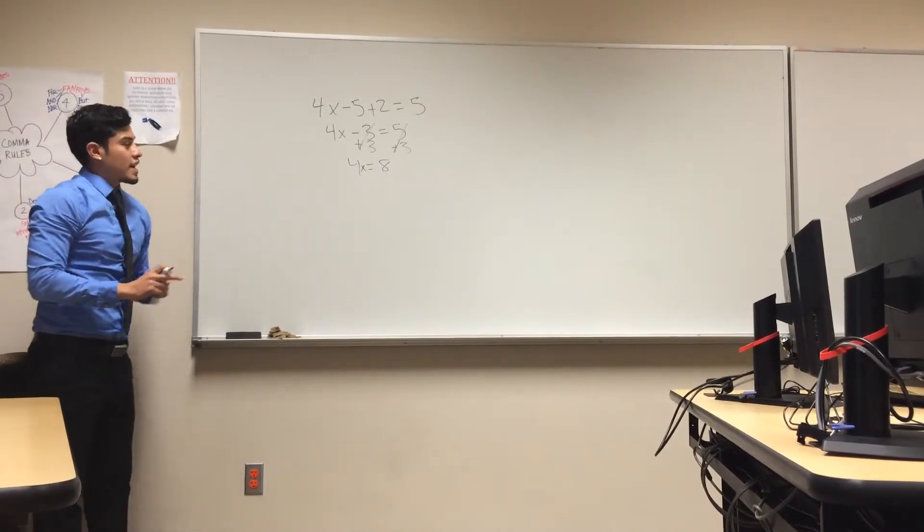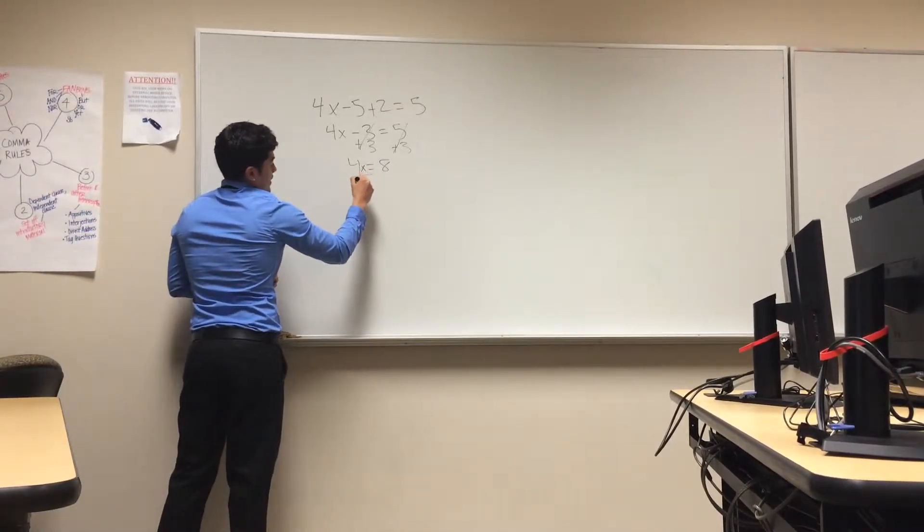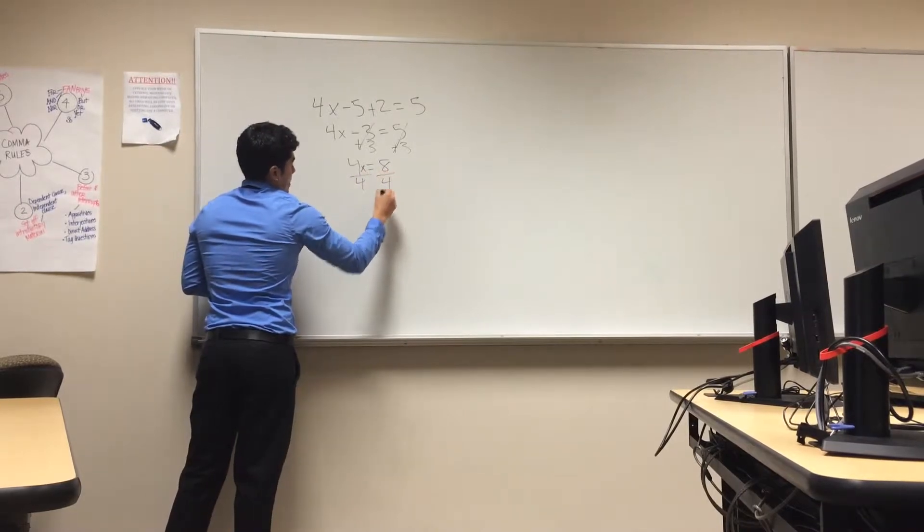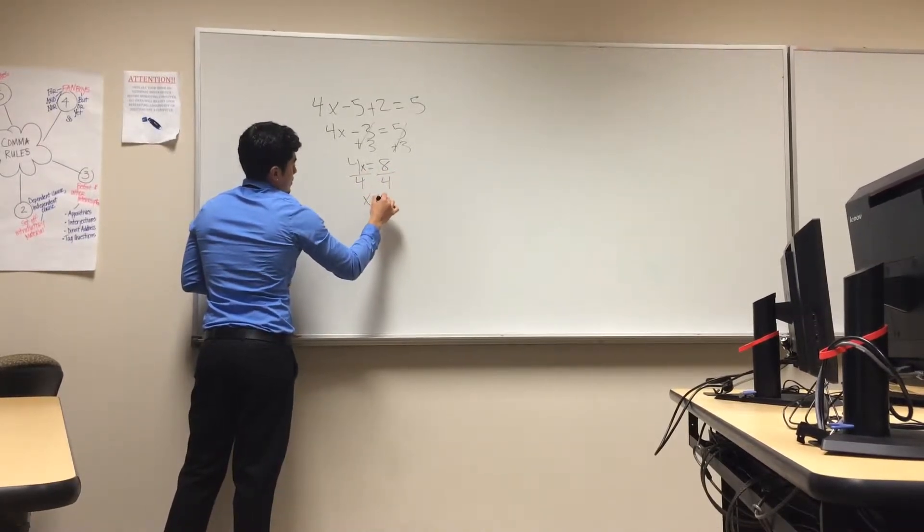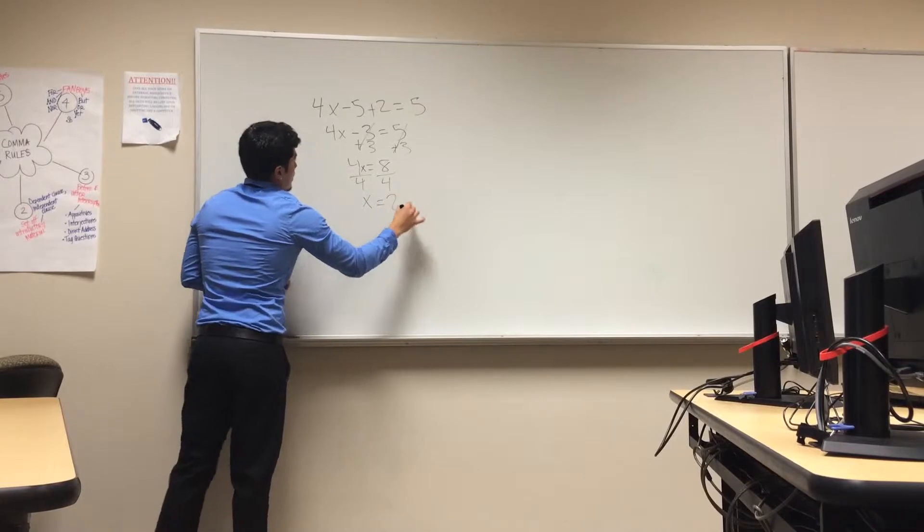Now, to isolate the x, you have to divide by 4 by both sides. And x will equal 2.